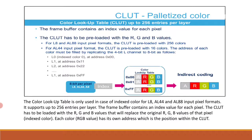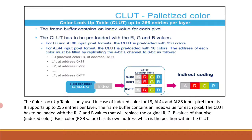In layer programming, every layer can be positioned and resized with flexible window position and size configuration. The programmable layer position and size define the first and last visible pixel of a line and the first and last visible line in the window. This allows displaying either the full image frame or only a part of the image frame.